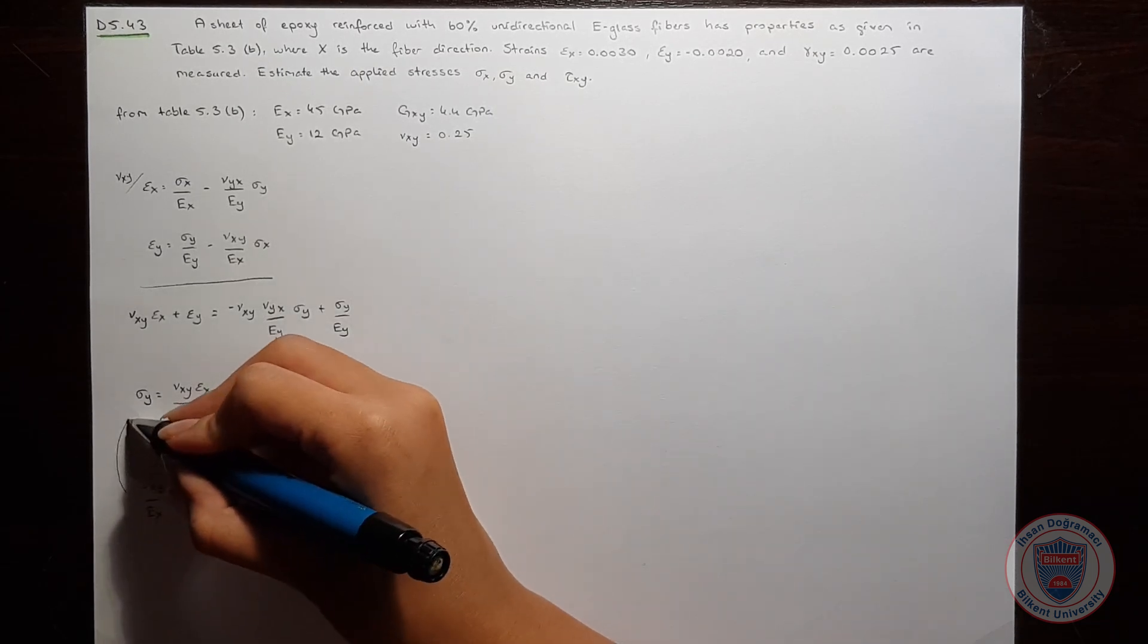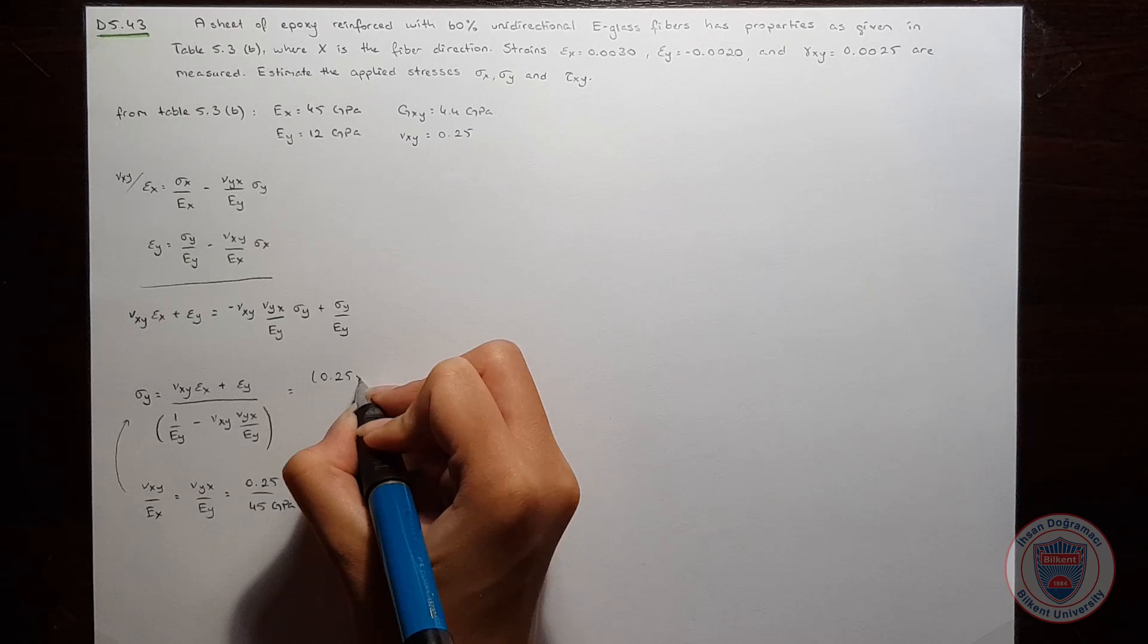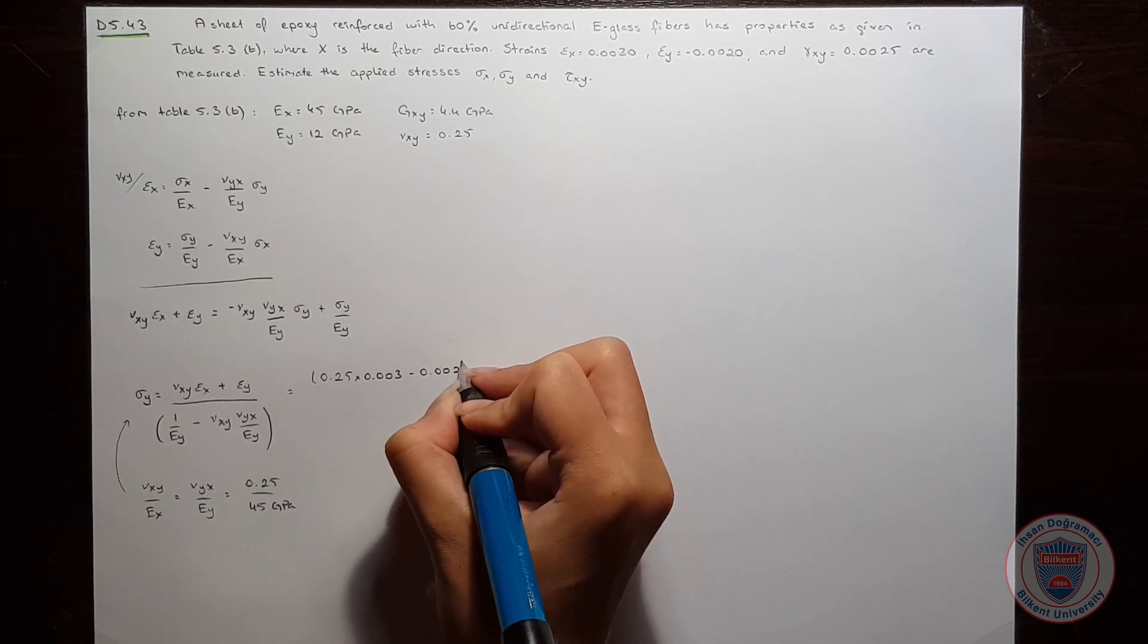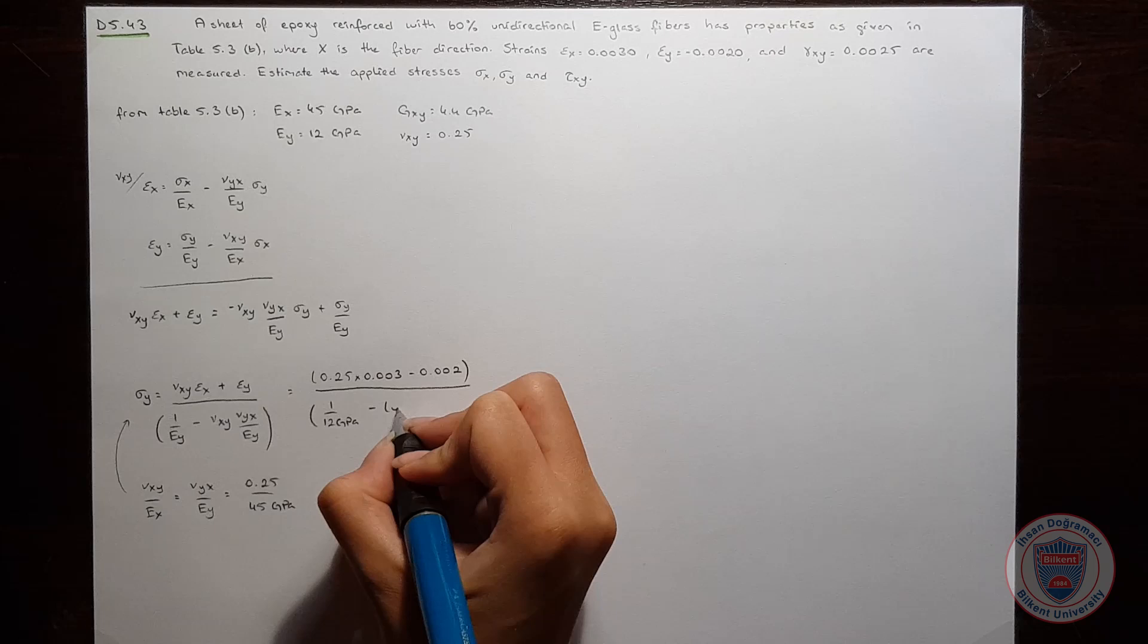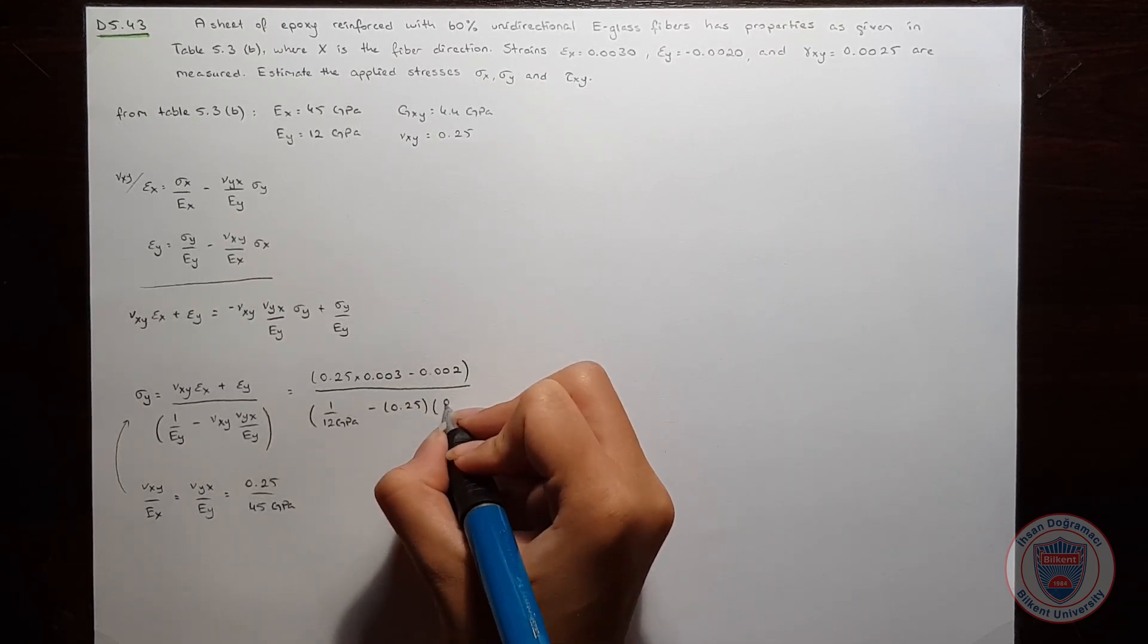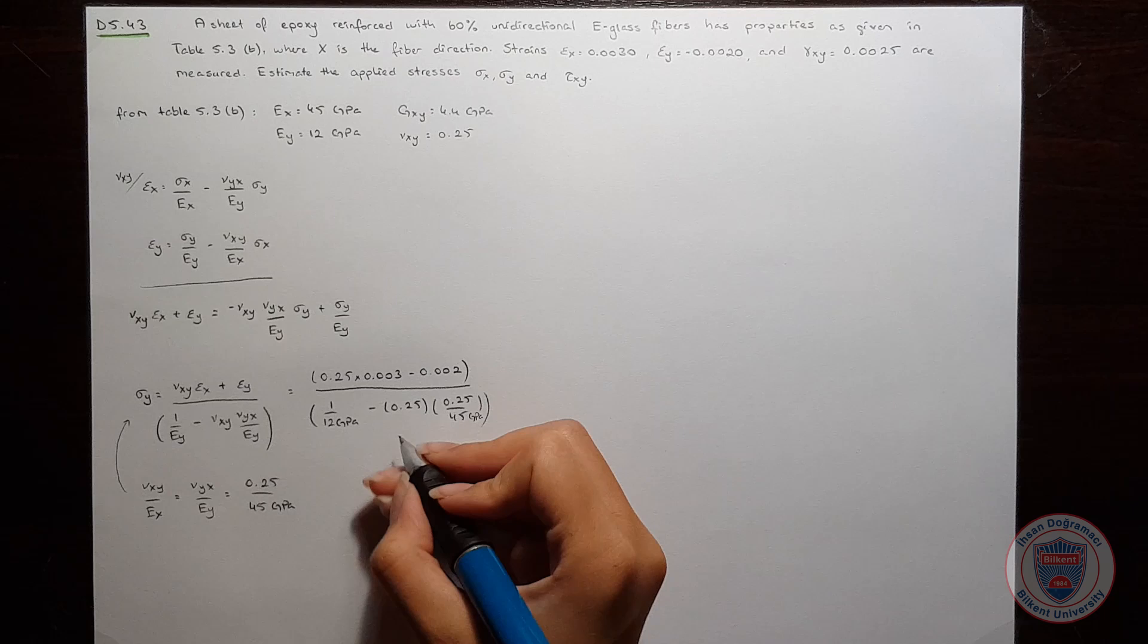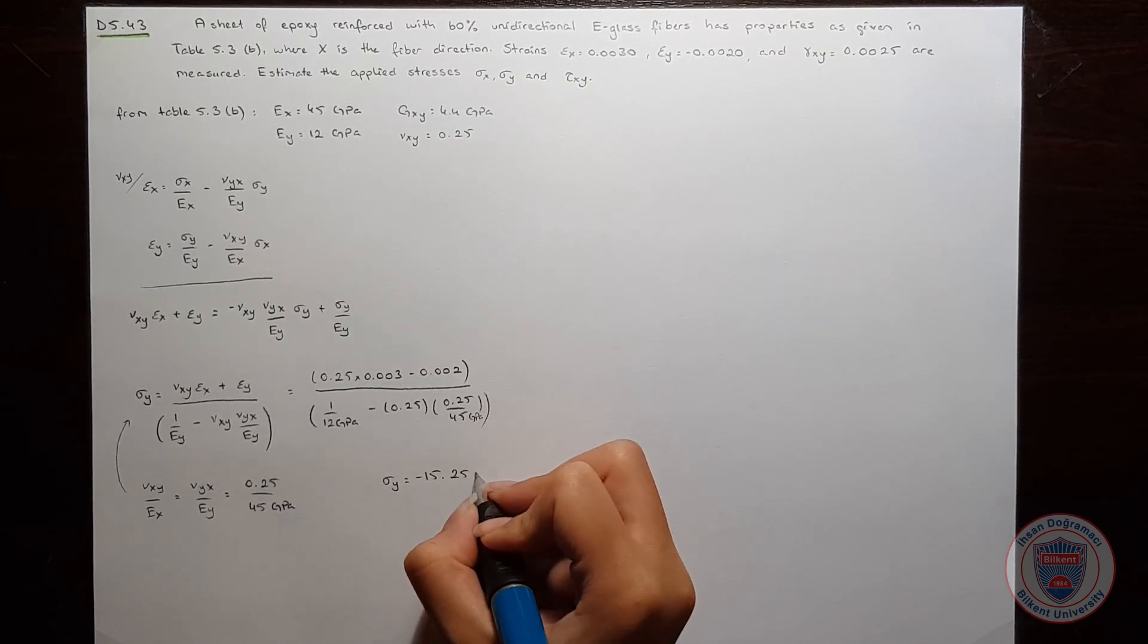So, let's combine them and we will get... and this is also GPa and when we calculate this we got σy is equal to minus 15.25 MPa.